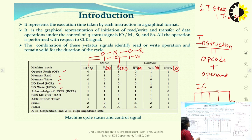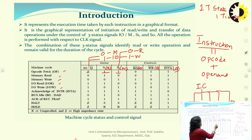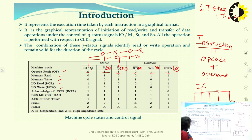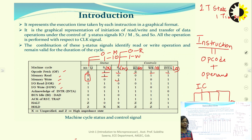For opcode fetch machine cycle, since opcode is always fetched from memory, IO/M̄ is 0. When S1 and S0 are both 1, opcode fetch occurs. During opcode fetch, opcode is read from memory, so R̄D̄ will be 0 and the other two control signals will be inactive. For memory read and memory write, IO/M̄ will also be 0. For read, S1 is 1; for write, S0 is 1. R̄D̄ is 0 during read and W̄R̄ is 0 during write.